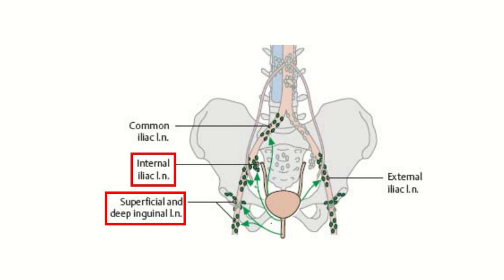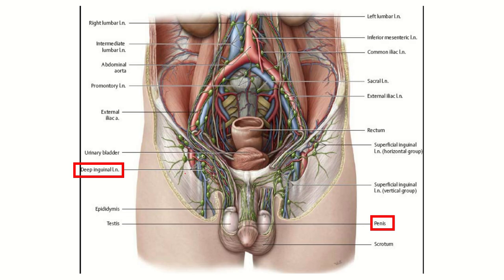Here we can see that this distal part drains into the superficial and deep inguinal group of lymph nodes. The more proximal part of the urethra drains into the internal iliac group of lymph nodes. So the terminal part of the male urethra drains into the superficial and deep inguinal lymph nodes, while the part closest to the bladder drains into the internal iliac group.